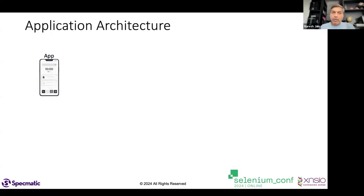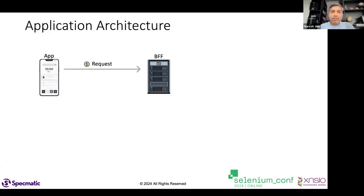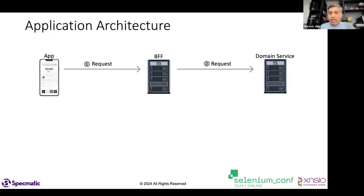I'm going to quickly jump in and take an example to explain the architecture of an application, then we'll talk about how to make things resilient. So here's something familiar: you have an app, the app makes a request to a backend-for-frontend (BFF), which may depend on one or more domain services. It makes a request to the domain service and gets a response back.